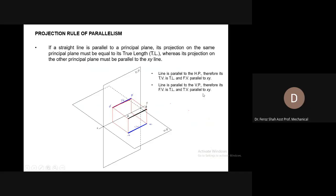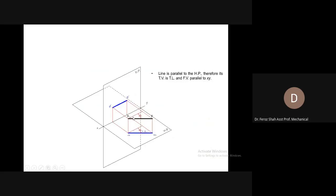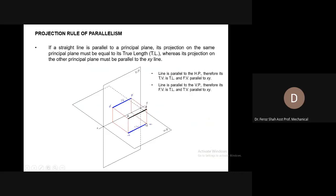Line is parallel to VP — therefore its front view is true length and its top view is parallel to XY. If we consider the line to be parallel to the vertical plane, the line AB is equidistant from the vertical plane, so it is parallel to the vertical plane. Its projection on the vertical plane — the front view — must show the true length, and its top view must be parallel to XY. The ends' distances from the XY in the top view are equidistant, confirming this.